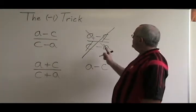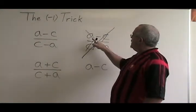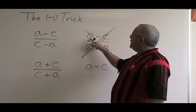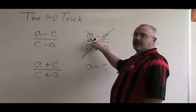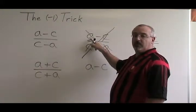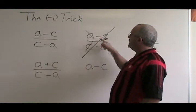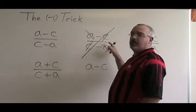Why? Because the a on the top of this fraction is part of a binomial. You can't cancel just a part of the binomial — you have to be able to cancel the entire binomial.